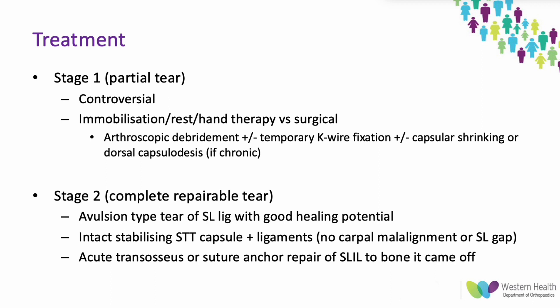For Stage 1 partial tears, treatment is controversial. Options include immobilization, rest, and hand therapy targeting proprioceptive rehabilitation of the FCR tendon — an important dynamic stabilizer — or surgical arthroscopic debridement, which has shown benefit as the pain is thought to be from mechanical impingement of the tear flap. Temporary K-wire fixation can augment this, and capsular shrinkage or dorsal capsulodesis are also described for more chronic injuries, though both significantly reduce range of motion.